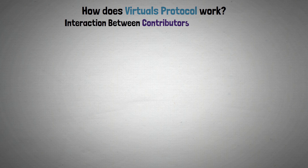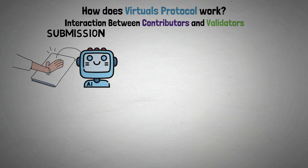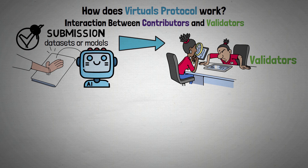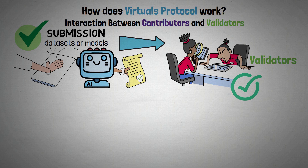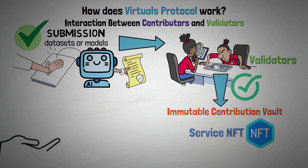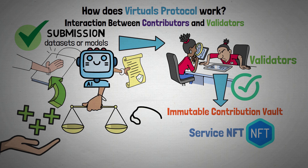In the interaction between contributors and validators: with a submission, contributors offer improvements to AI agents, like fresh data sets or models. These proposals are then evaluated by validators to make sure they adhere to the protocol's requirements and the goals of the agents. After being accepted, the contribution is added to the agent's Immutable Contribution Vault and minted as a service NFT. Rewards are given to contributors in proportion to the impact and value of their contributions.